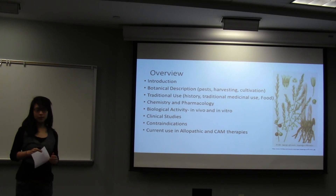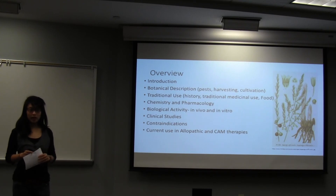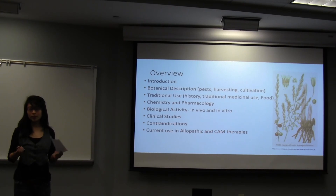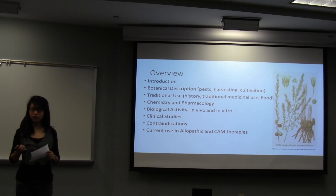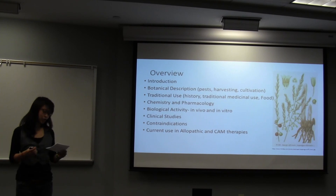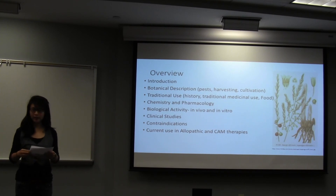Some interesting things about asparagus: the name is actually of Persian origin, and it originated in the Mediterranean area. The Romans, Greeks, and Egyptians prized it highly. When Rome fell, it kind of became wild. It was brought to monastic gardens during the Middle Ages, then the Huguenots brought it to France, and then the English brought it to the United States. It's now cultivated all over New Zealand and the United States — that's where you can find it in stores.